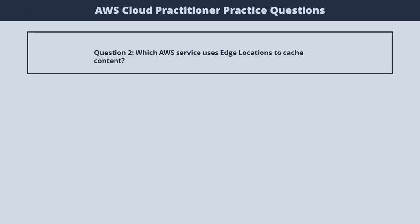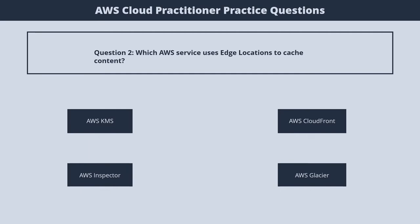Question 2. Which AWS service uses edge locations to cache content? 1. AWS KMS. 2. AWS CloudFront. 3. AWS Inspector. 4. AWS Glacier. The correct answer is 2. AWS CloudFront.